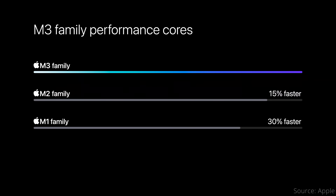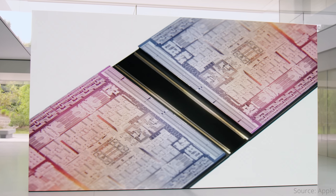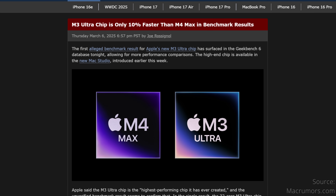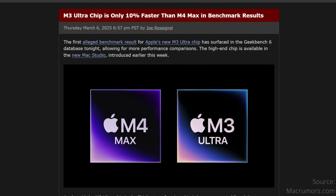However, single-core CPU performance generally stays the same. That means the M3 Ultra's single-core performance should be comparable to the M3 Max, which is 20% slower than the M4 Max. Of course, the Ultra, being two Max chips fused together, has twice as many CPU and GPU cores, so it should be faster in multi-core workloads. However, initial reports seem to indicate maybe only 10% faster, so definitely a lot less difference than you might expect.